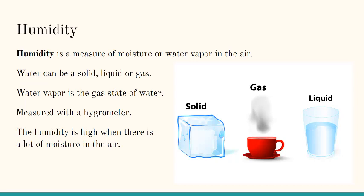Humidity is a measure of moisture or water vapor in the air. Water can be as solid as in ice, liquid, or gas like steam. Water vapor is the gas state of water. Humidity is measured with a hygrometer. The humidity is high when there is a lot of moisture in the air.